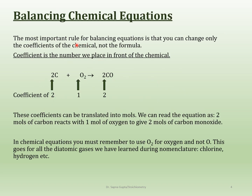Now let's talk about balancing chemical equations. Balancing an equation means making sure that the atoms on the left-hand side equal the atoms on the right-hand side — conservation of matter. Here I have an equation with carbon and oxygen, but this time going to carbon monoxide instead of carbon dioxide. When we wrote the first equation for carbon dioxide, everything was one and one — one carbon, one carbon, two oxygen, two oxygen. Everything is accounted for.